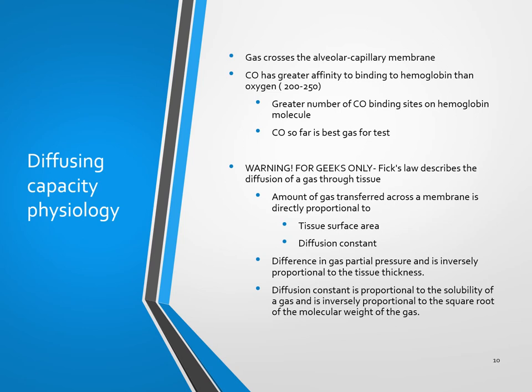If you're a bit of a geek and want to know exactly why a gas is diffused from the alveola into the capillary membrane, it's done by Fick's law — and also Graham's law. It has to do with the amount of gas transferred across the membrane being directly proportional to the surface area and the diffusion constant. Illnesses that decrease surface area will have a decrease in DLCO. Also, fibrotic tissue can impact the diffusion. The hemoglobin molecule has so many receptor sites for CO — even greater than for oxygen — which is why they use this gas.